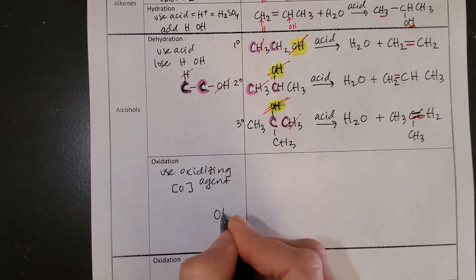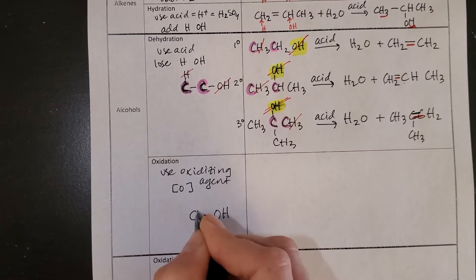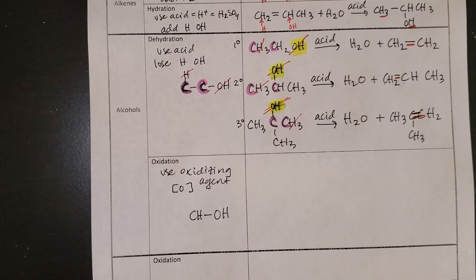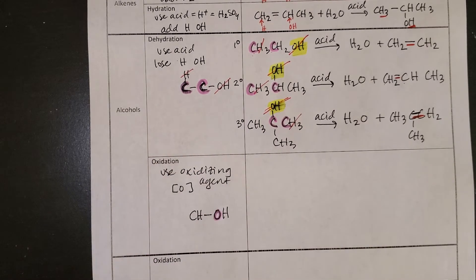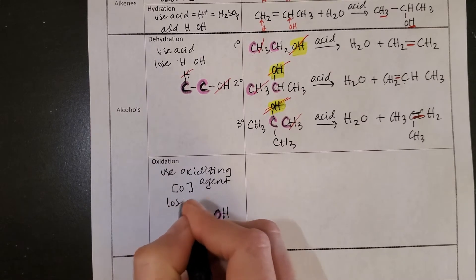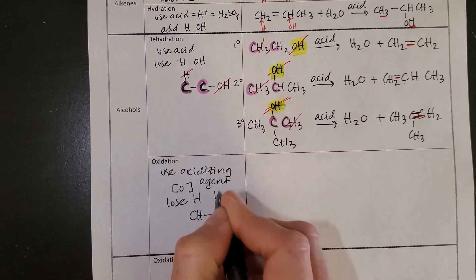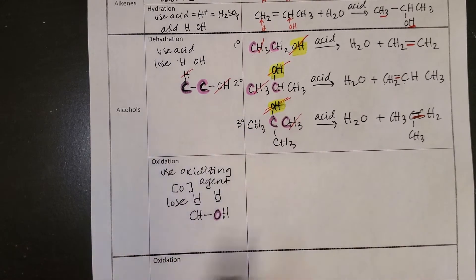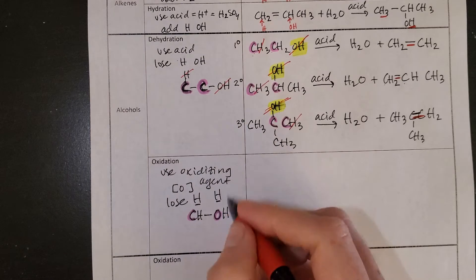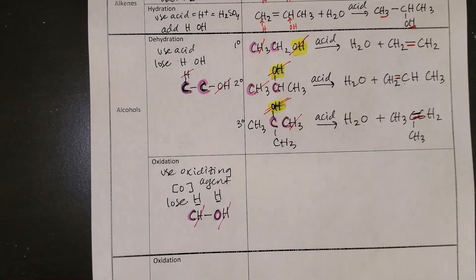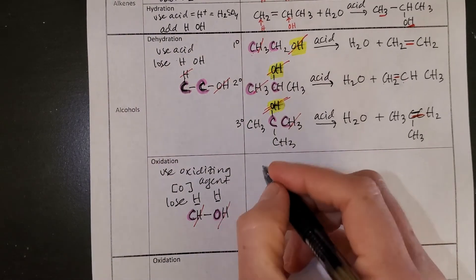And for oxidizing agent, we will write a bracket O over the arrow. Here, we are going to again start with an alcohol. And in that alcohol, we will see that the O is going to, we are going to lose two H's. So we will lose an H and then another H. So oxygen will lose an H, and its neighboring carbon will lose an H. That means we will always see two H's being removed.